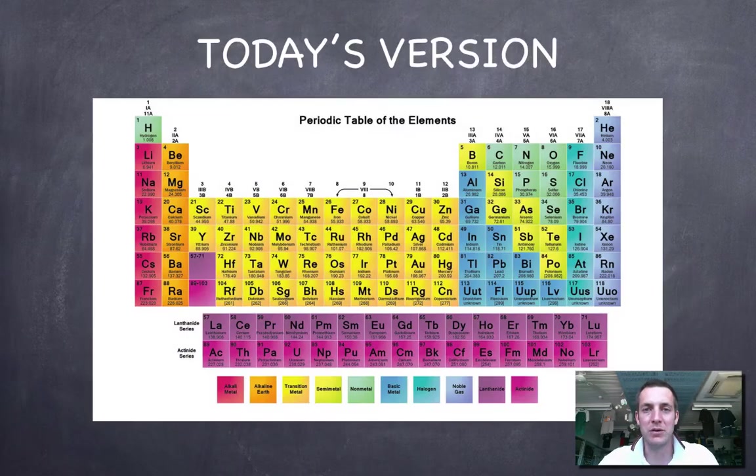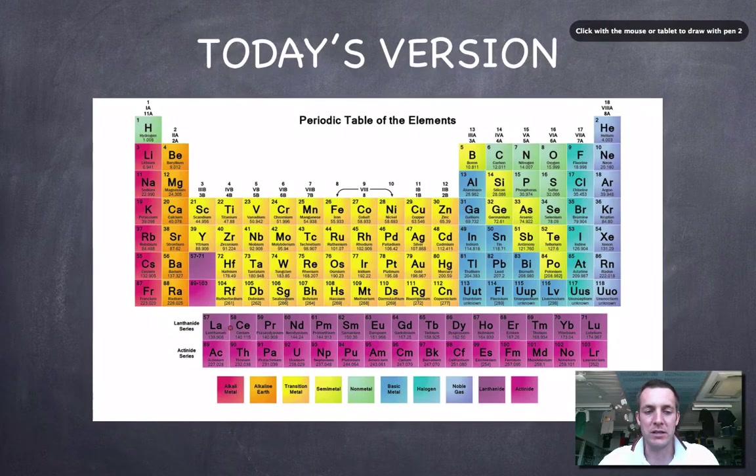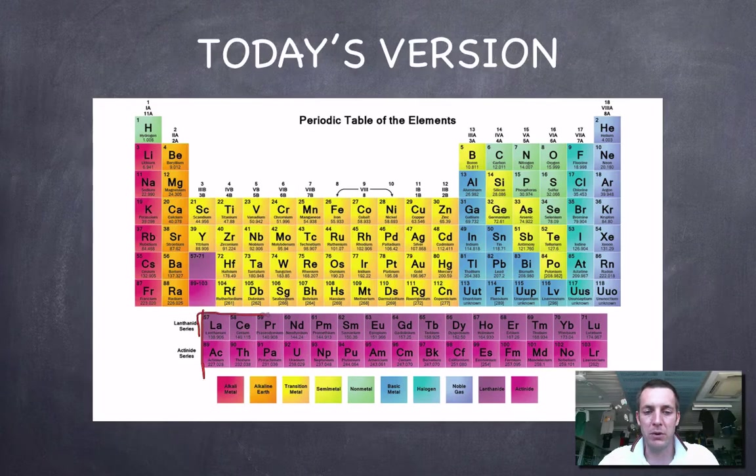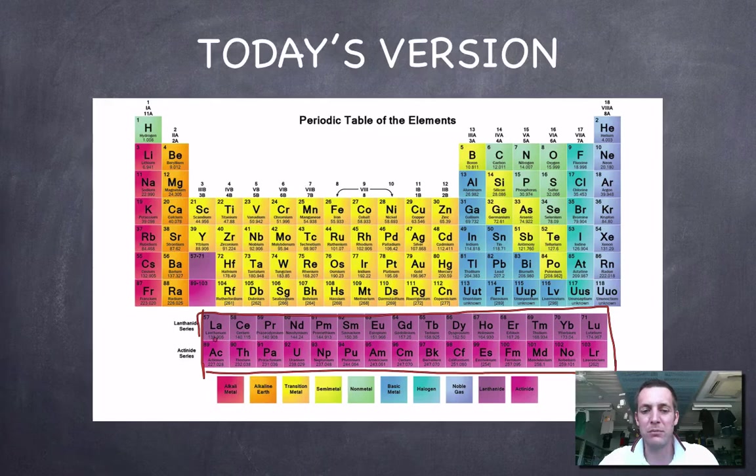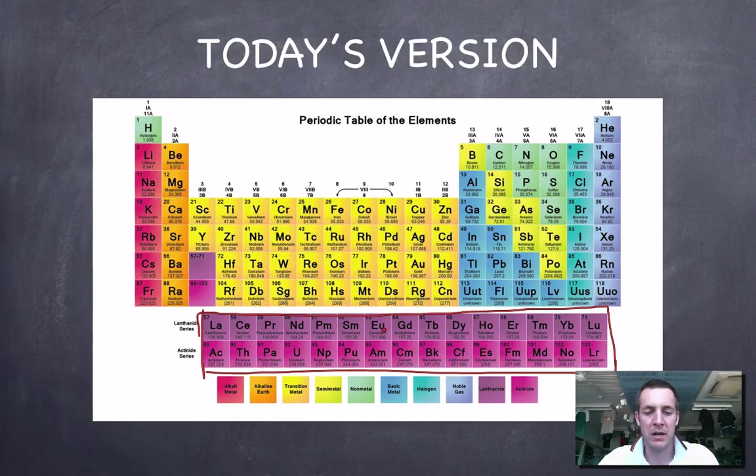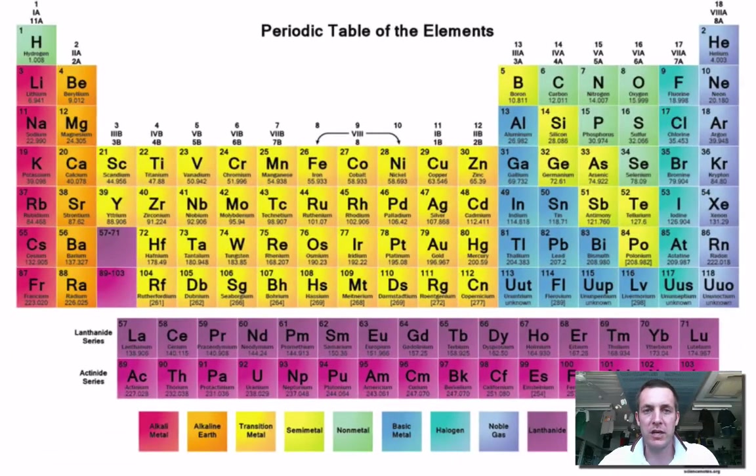We can see that that block of elements called the f-block—you don't need to know too much about what f-block means in the standard level course—but the lanthanides and the actinides, they're kind of taken out of there and put down here, just to make the table fit onto a piece of paper a bit better.